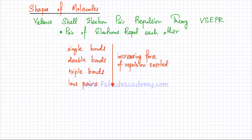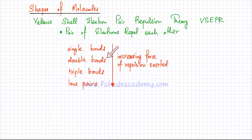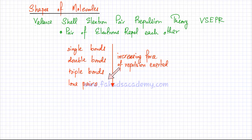Single bonds have the least force of repulsion because they only have one pair of electrons. A double bond has two pairs of electrons — four electrons grouped together — so they exert more force of repulsion. Triple bonds have even more. Lone pairs, because no other atom is attracting them, have a very concentrated negative charge, so they exert the maximum force of repulsion.